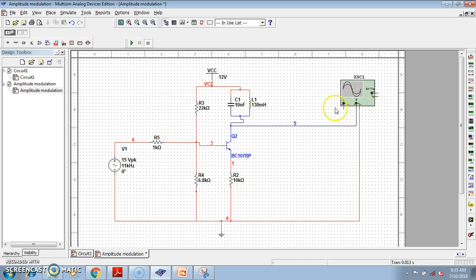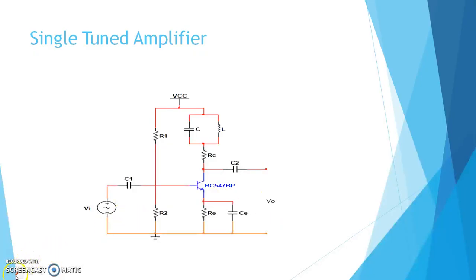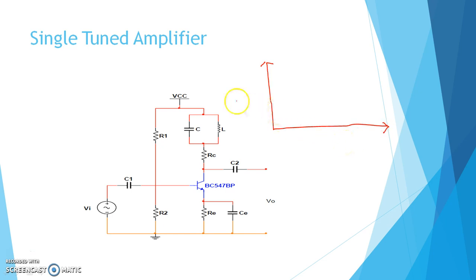Let us check. In this case of single tuned amplifier, what can we expect? In the single tuned amplifier it will amplify only a certain frequency — the gain at a particular frequency will be very high and the gain at other frequencies will be very small. So if we plot gain on the y-axis and frequency on the x-axis, what type of graph can we expect?